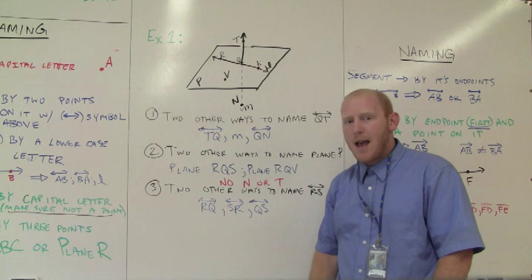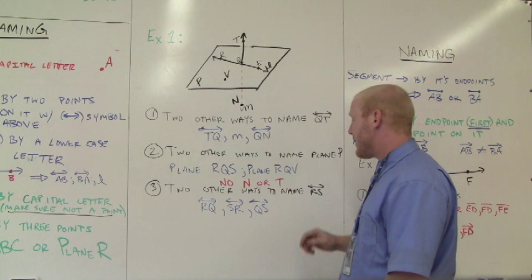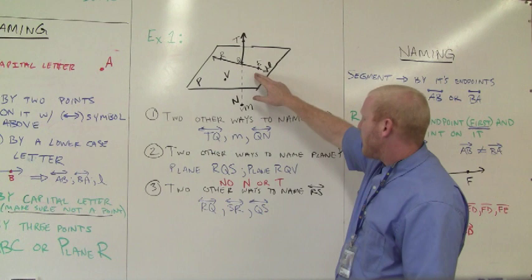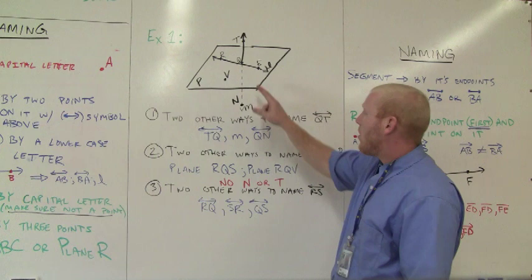Finally, we're going to talk about name two other ways to name line RS. RS is right here. Well, obviously, I can flip it around. I can have SR. I can say RQ. I can say QS. These are all names for that line.